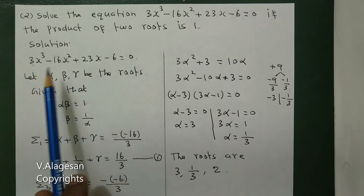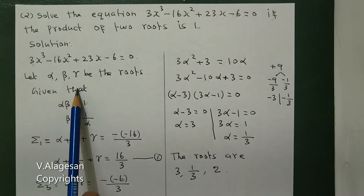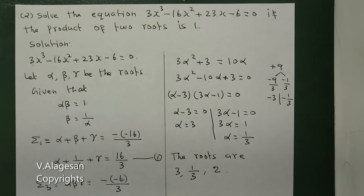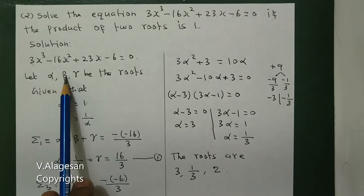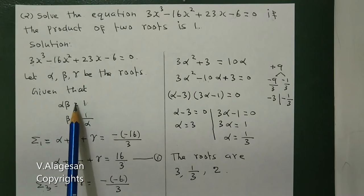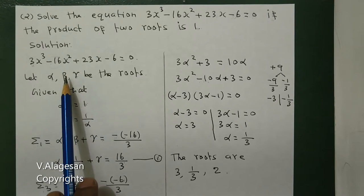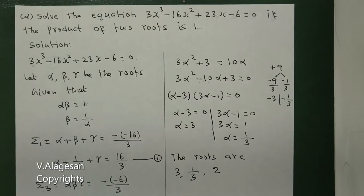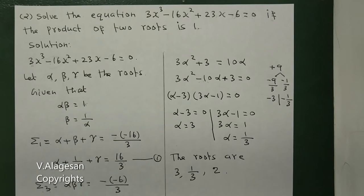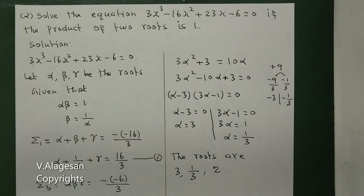First, for the given equation, let alpha, beta, gamma be the roots. Given that the product of 2 roots is 1 — that is, alpha into beta equal to 1. So beta equal to 1 by alpha. Product of any 2 roots is 1, so taking alpha into beta, beta equals 1 by alpha.